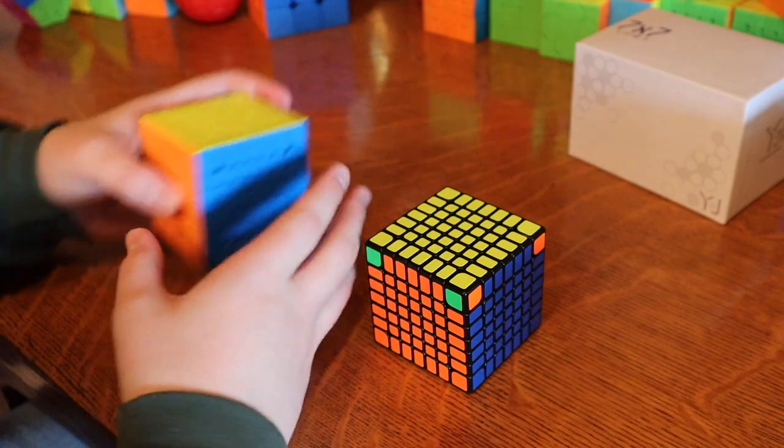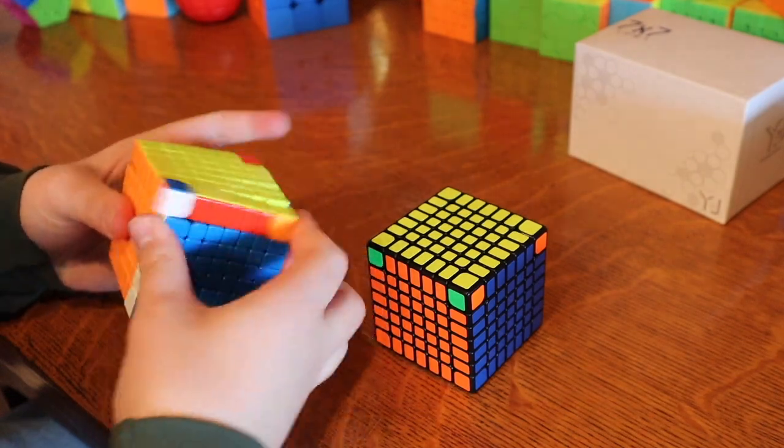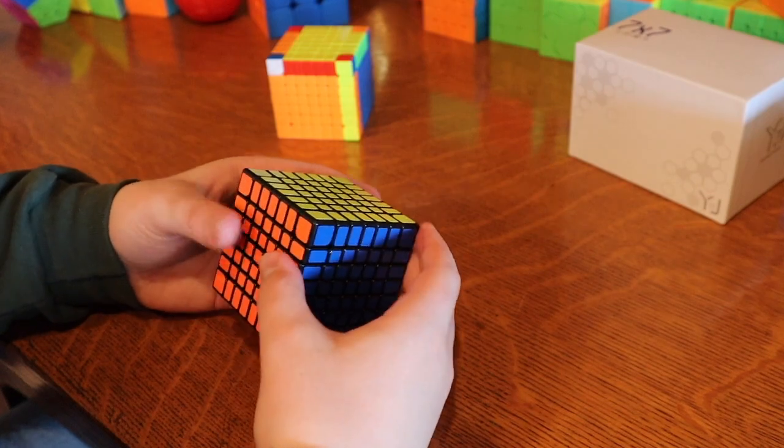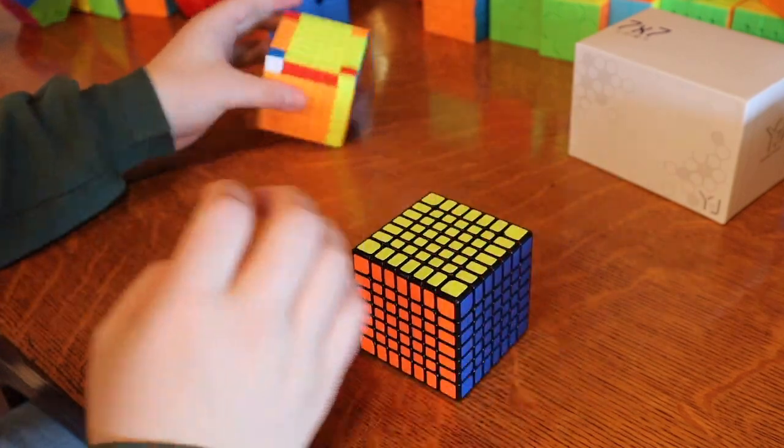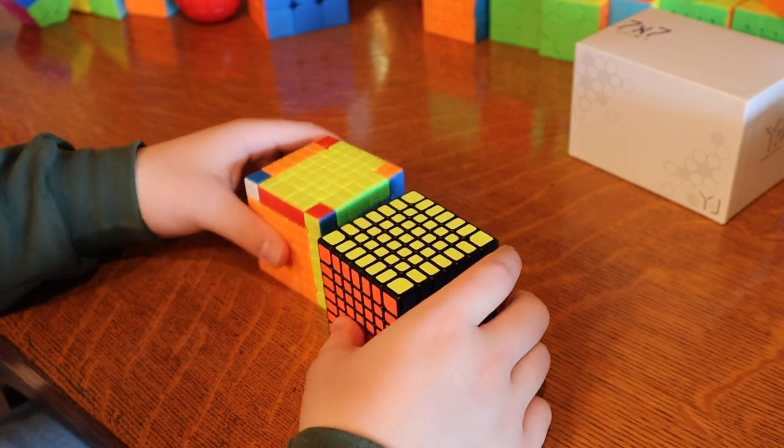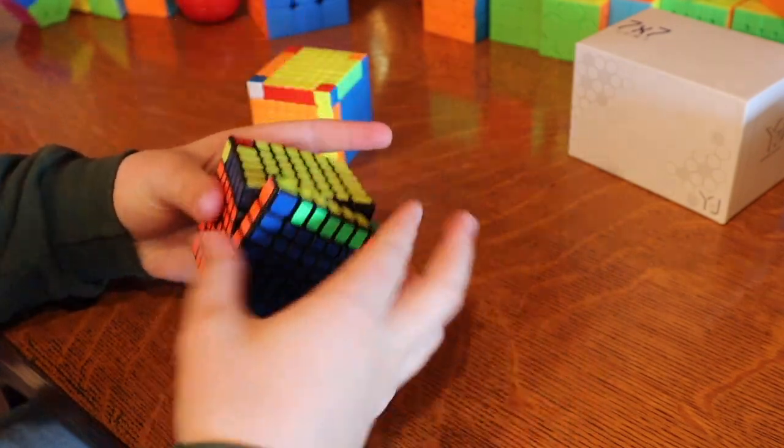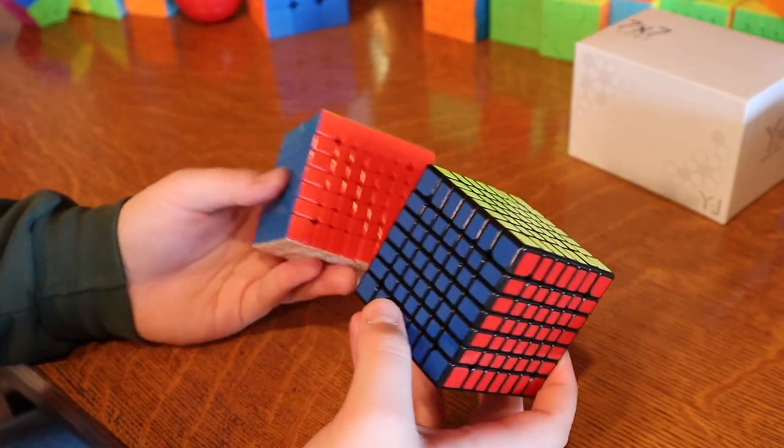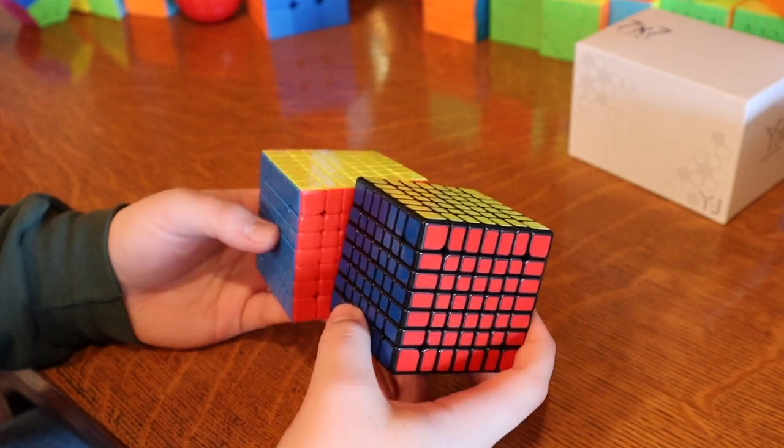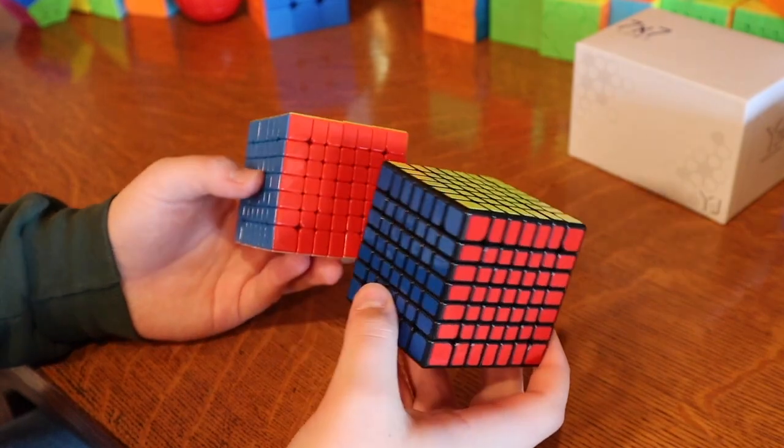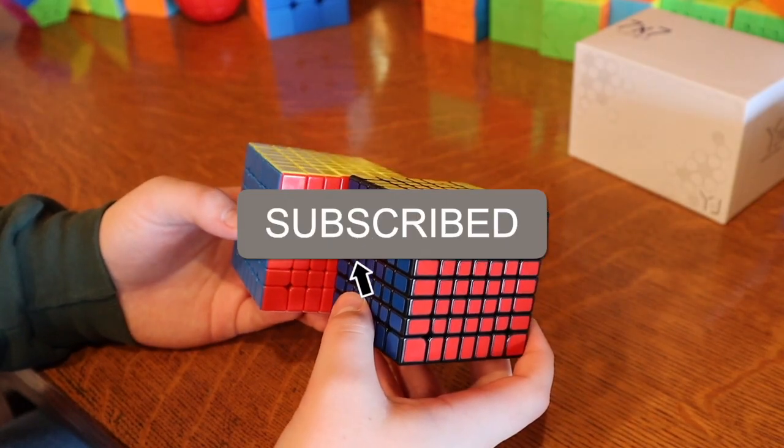This cube feels really big for some reason. I mean, I know technically the stickers add a little bit of width, but it feels a lot bigger. I don't think it is. Yeah, it's not any bigger, but it feels like it. It's kind of weird. So if you guys have any ideas for what I could do with these two 7x7s, feel free to leave them in the comments section. And remember to stay tuned for the 50th video. We'll be doing a giveaway then, so it's going to be pretty fun. And don't forget to subscribe and hit the notification bell.